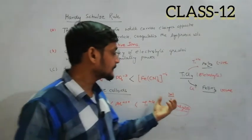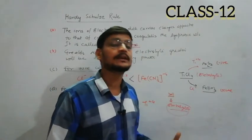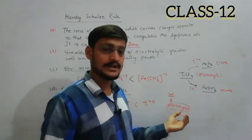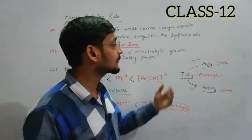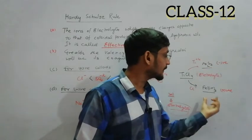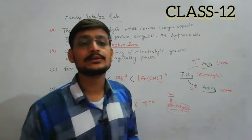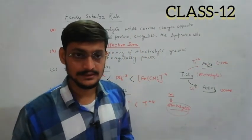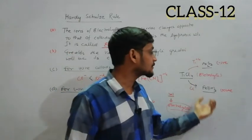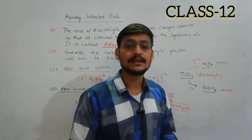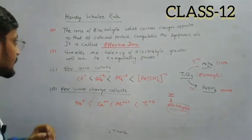So when we add an electrolyte to any colloidal solution, the opposite charge of the electrolyte neutralizes the colloidal particles and precipitates them. This precipitation power or coagulation power is what Hardy-Schulze rule explains to us.